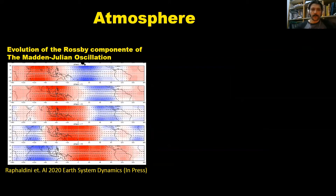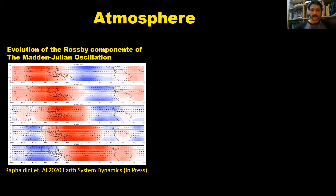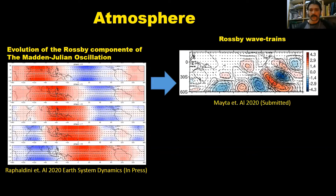Here we see the reconstruction of the Rossby wave component of the Madden-Julian Oscillation, which is this global vortex pattern that propagates along the equator of the Earth. This will be published next month in Earth System Dynamics. We have also been studying trains of Rossby waves that leave the Pacific and go to the subtropics, reaching South America.